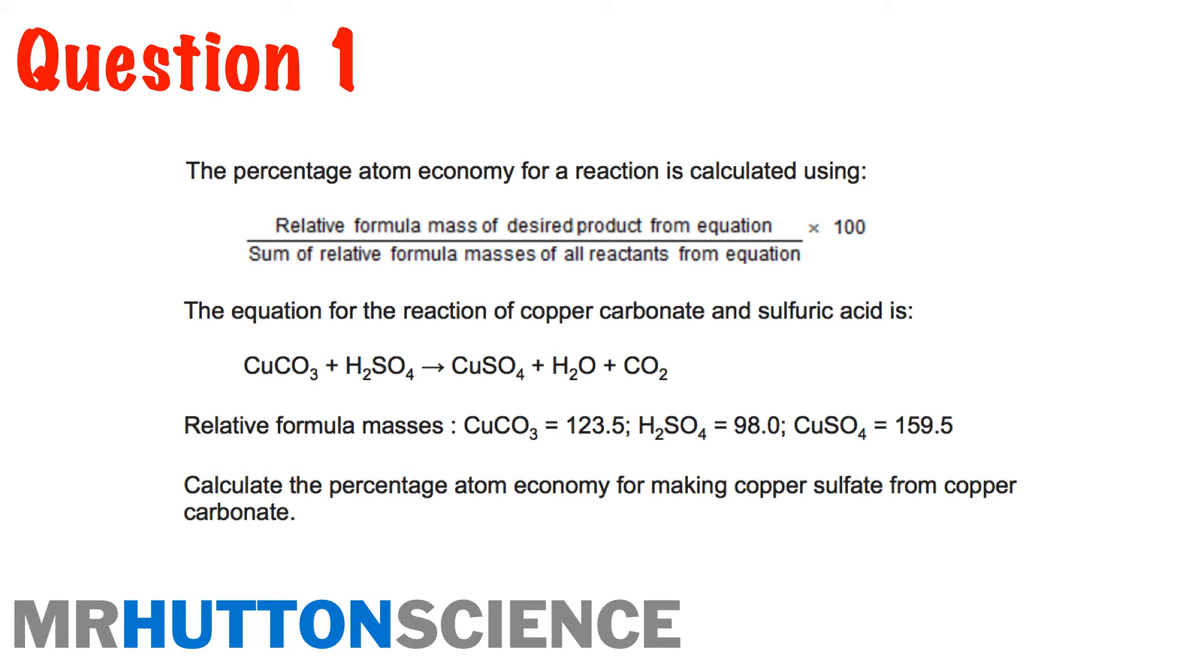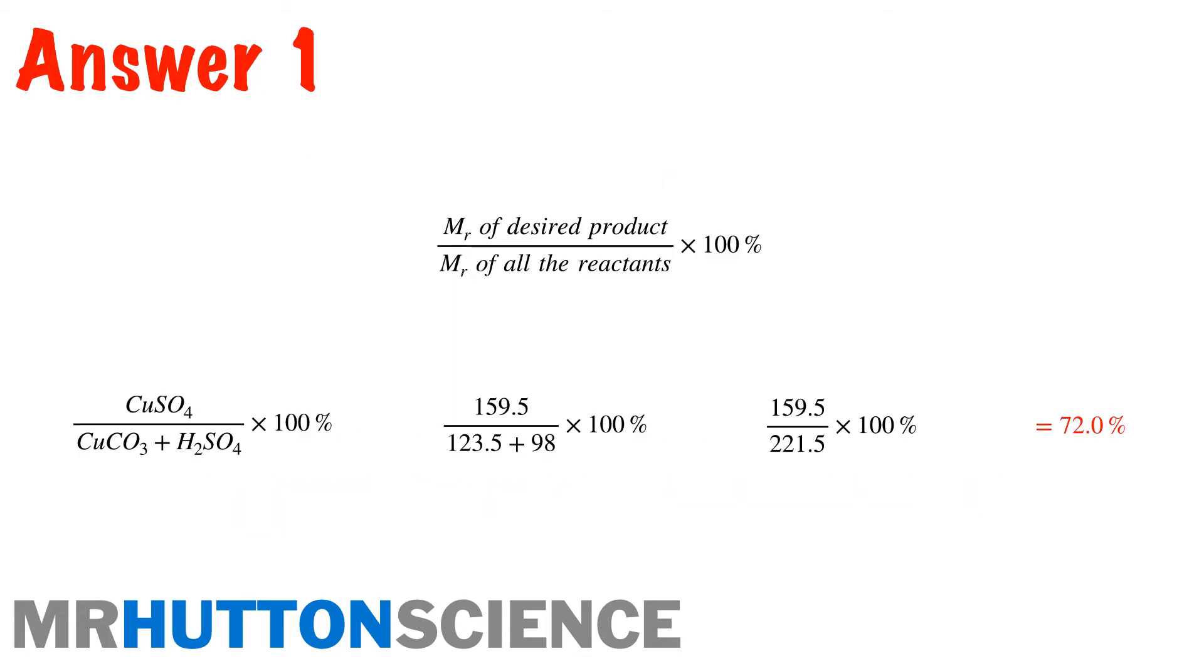Okay. Right. Let's have a look at the answer then, guys. Right. Here we are. So we've got our copper sulfate divided by our reactants, which is the copper carbonate and sulfuric acid. And so we've plugged in the numbers from the question to give us an overall atom economy of 72%. Hopefully you've got the same answer. If not, just go back and double-check and just drop me a message or talk to your teachers if you're still unsure.